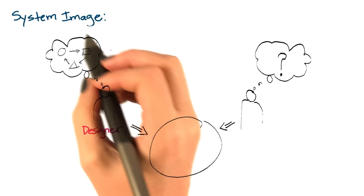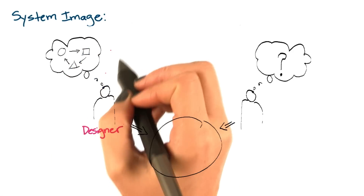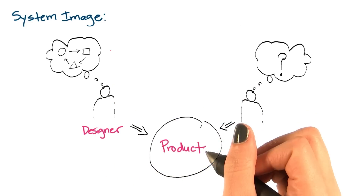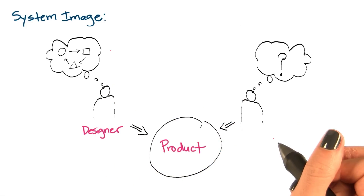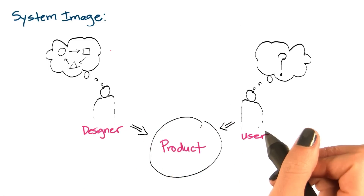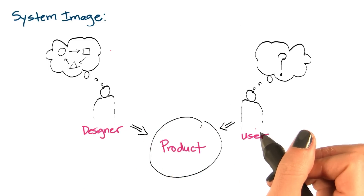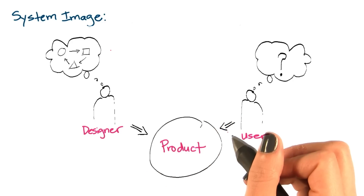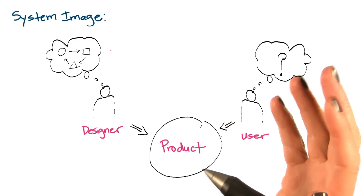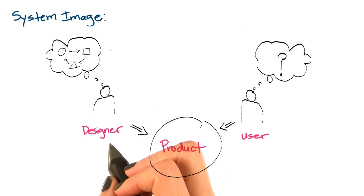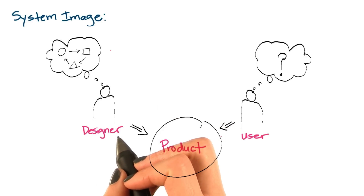The designer has a clear conceptual model of how a product works. But when users interact with the product, designers aren't present. Users have to get their conceptual model from the product system image. When interacting with a product, we can't talk to designers to understand their conceptual model.